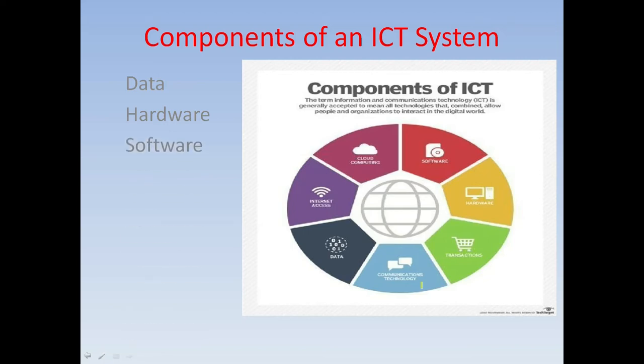The next component is software. Software is set of instructions that we give to the computer so that it performs a specific task. The next component is information. When the data that we input is processed and output is produced, that output becomes information.